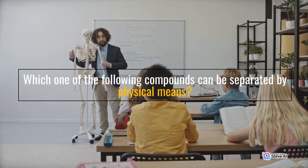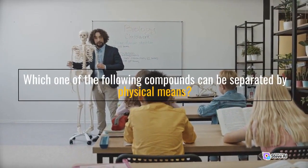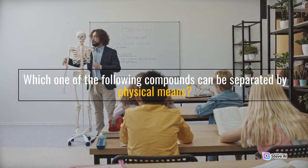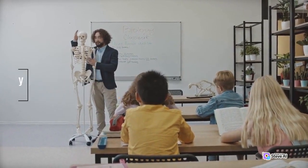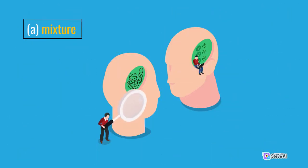Which one of the following compounds can be separated by physical means? Answer: A — mixture.